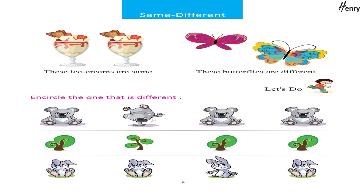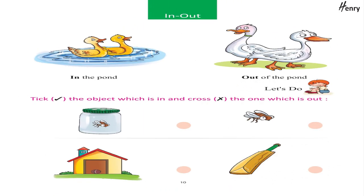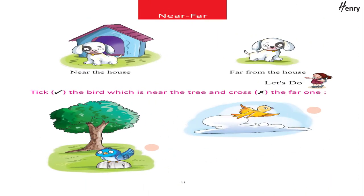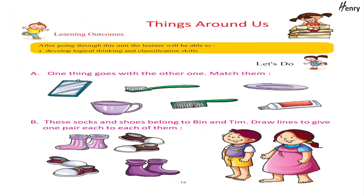In, out — in the pond, out of the pond. Let's do: tick the object which is in and cross the one which is out. Near, far — near the house, far from the house. Let's do: tick the bird which is near the tree and cross the far one.